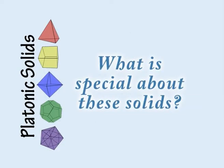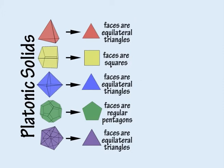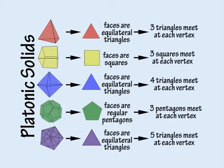What is special about these solids? The faces of a Platonic solid are congruent regular polygons, arranged in three-dimensional space to form a convex polyhedron, with the same number of faces meeting at each vertex.